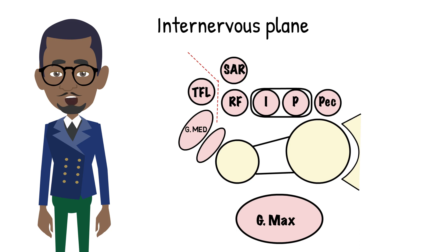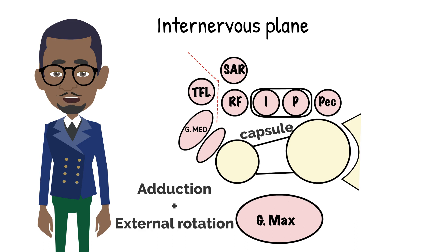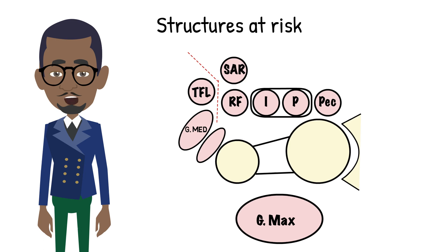Detachment and retraction of the rectus femoris origin medially exposes the capsule with adduction and external rotation of the leg. The lateral femoral cutaneous nerve is at risk as it crosses sartorius superficially.